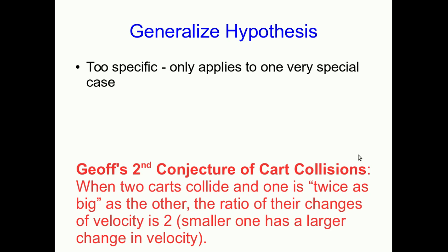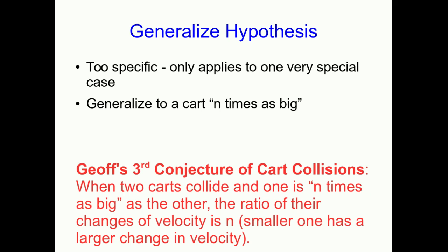That's still not a very satisfactory hypothesis though. It's too specialized. It only applies to one special case when the carts have a size ratio of two. But I think you can see the pattern. A size ratio of two leads to a ratio of change of velocity of two. So it seems reasonable that a size ratio of N, so if one cart is N times as big as the other, then the ratio of their changes of velocity should also be N, with again the smaller one having the larger change in velocity. And of course we can check this.